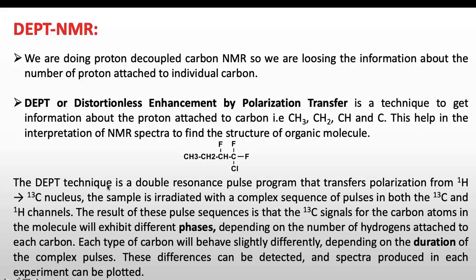In the DEPT technique, it is a double resonance pulse program that transfers polarization from proton to carbon nucleus. The sample is irradiated with a complex sequence of pulses in both the ¹³C and ¹H channels. The result of these pulse sequences is that the ¹³C signal for the carbon atoms in the molecule will exhibit different phases.